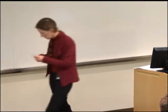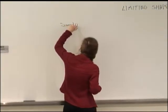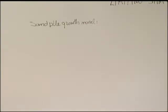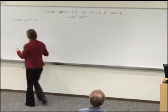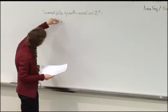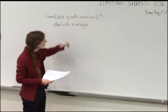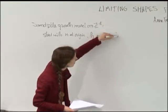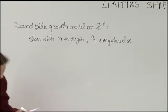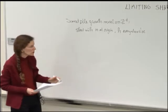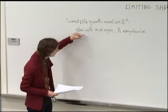First, I should say what we mean by a sand pile growth model. In the sand pile growth model, we start with some initial configuration. We place a number N at the origin and H everywhere else. Typically, N is large and H is not so large, and then we stabilize this by a sand pile rule.